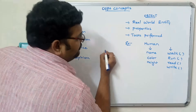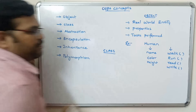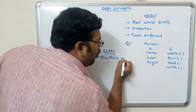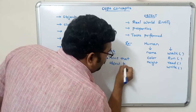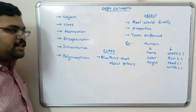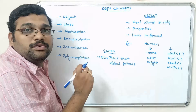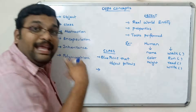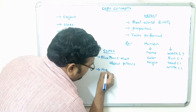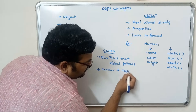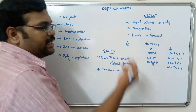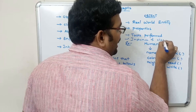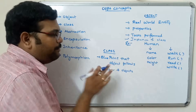Now, what about the class? A class is a blueprint that an object follows. Without the class, an object does not exist. A class consists of any number of objects, and an object can be defined as an instance of a class. That means the object will follow the prototype defined by the class.